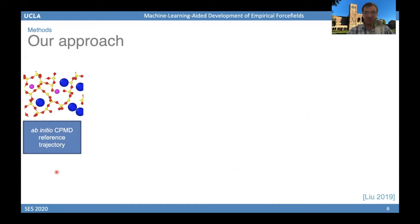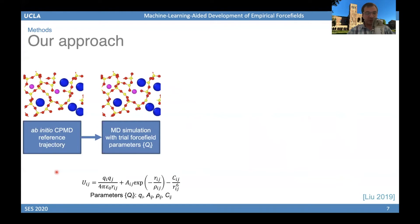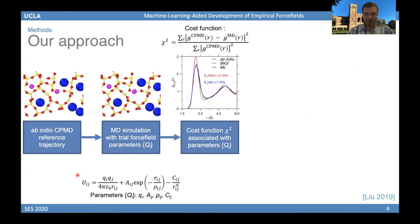Our approach is as follows. First, we need a reference to compare our simulation against and to calculate the cost function. For this, we conduct ab initio molecular dynamics simulation — Car-Parrinello molecular dynamics — which gives us reference trajectories. We then simulate the same material, pure silica, with classical molecular dynamics, assuming atoms interact via the Buckingham force field. Initially we don't know the optimal parameter values, so we start with trial parameters and iteratively optimize them by active learning.